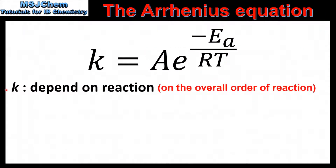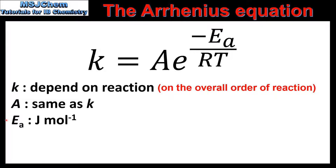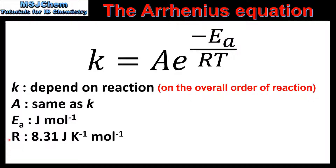The units of K depend on the reaction. The units of A are the same as the rate constant K. The units for the activation energy are joules per mol, and the gas constant has the units joules per Kelvin per mol.